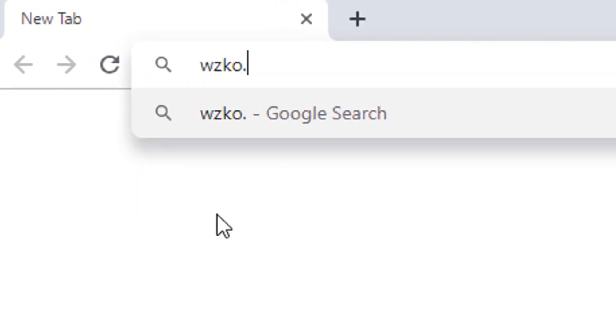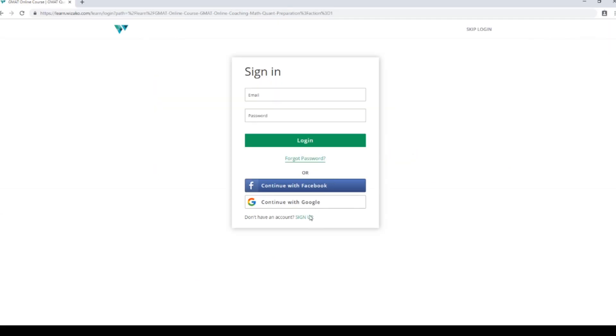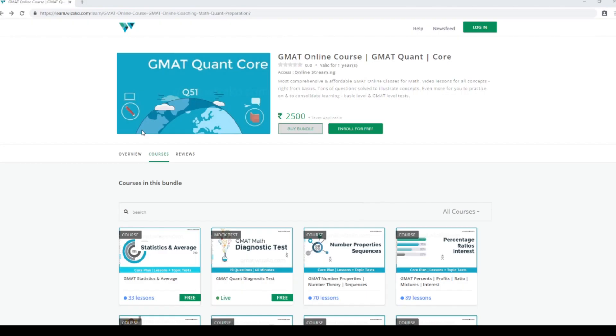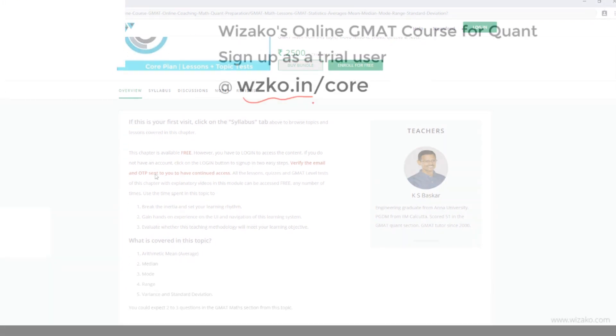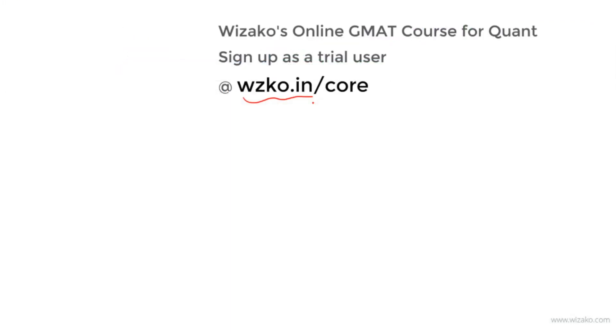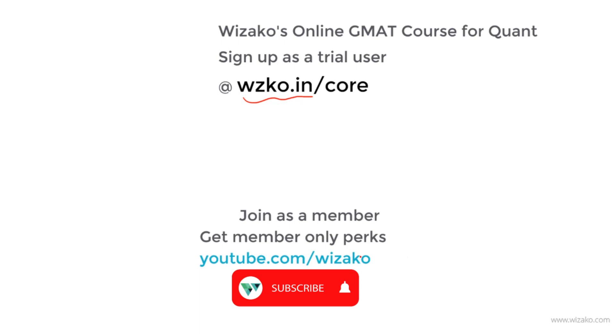Before you leave, two things. Sign up as a trial user at wzko.in slash core. One of the most comprehensive online GMAT course. Get started with a free topic, statistics and averages. Build momentum to your GMAT preparation. Subsequently, pay up and unlock the remaining topics. Lastly, subscribe to the channel youtube.com slash wizako and spread the word among your friends who are preparing for GMAT. You may also choose to join this channel as a member for a small monthly fee and enjoy member-only perks that come with it and will help you boost your GMAT preparation.